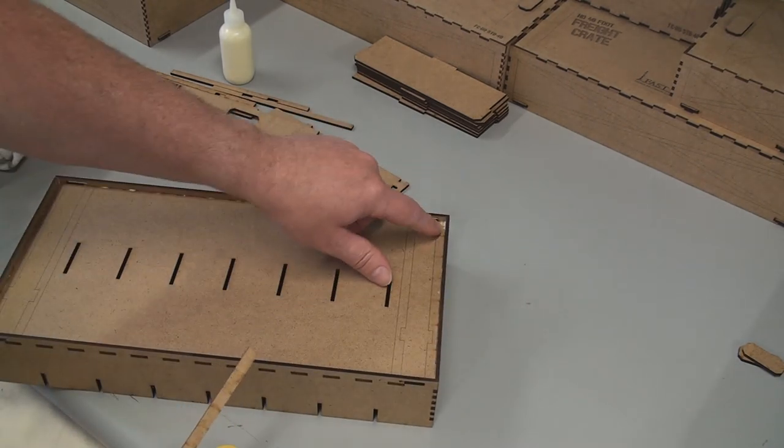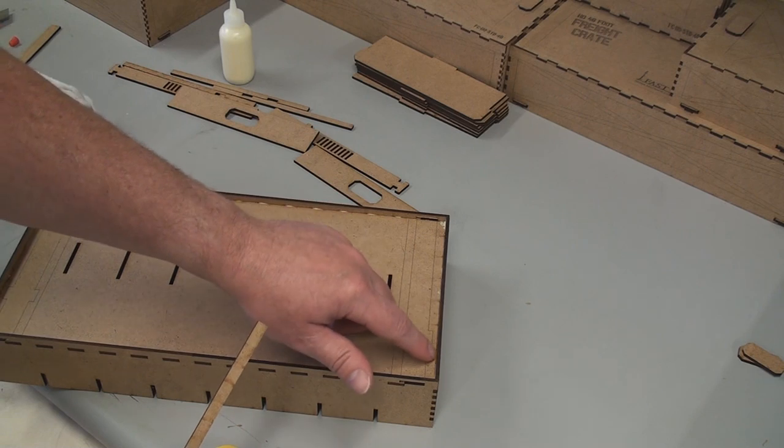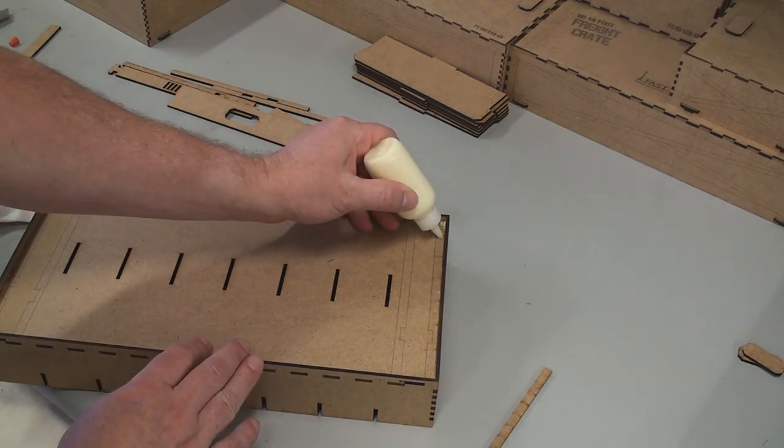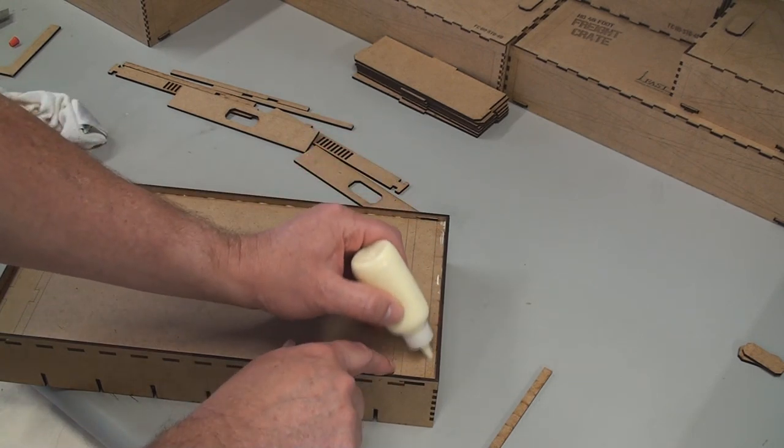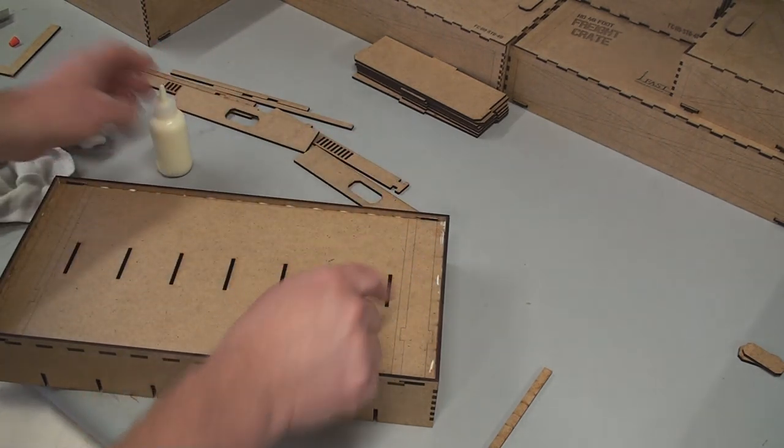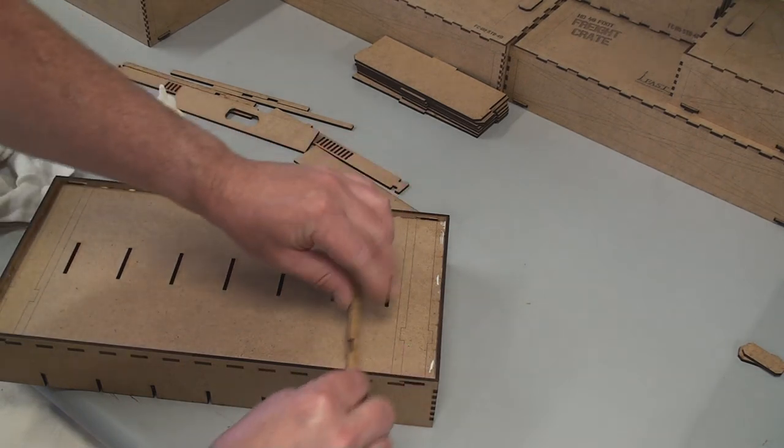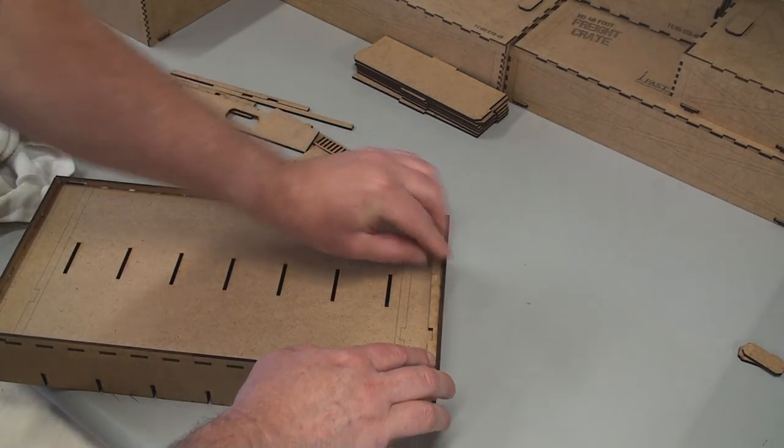So we're going to put a very small amount of glue along this edge. The reason for the small amount of glue is you don't want it to squeeze out into the area where the lock part has to move. Otherwise, you'll glue everything together. You see, I'll put three really small blobs of glue.